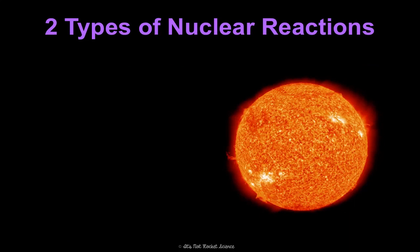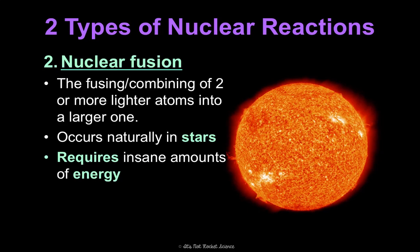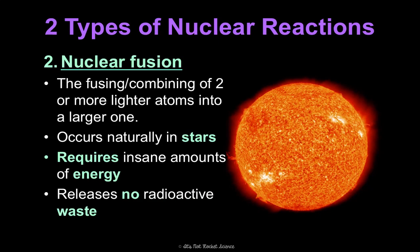The other type of nuclear reaction is nuclear fusion. Fuse means to combine, so it is the combining of two or more lighter atoms into a larger one, and this does occur naturally — it's what happens in stars, what the sun does. It requires insane amounts of energy but releases no radioactive waste, so it's totally safe. If we can learn how to harness this reaction in power plants, we would make no radioactive waste, which would be amazing. Here's an example: two hydrogens fuse to make helium and an insane amount of energy.